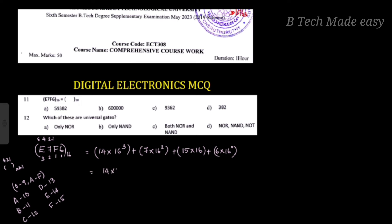So we have: 14 into 16 cubed, plus 7 into 16 squared, plus 15 into 16, plus 6 into 1 (since 16 raised to 0 is equal to 1). Then the total calculation gives us 16 raised to 0 equals 1, and 16 to 1 equals 6.